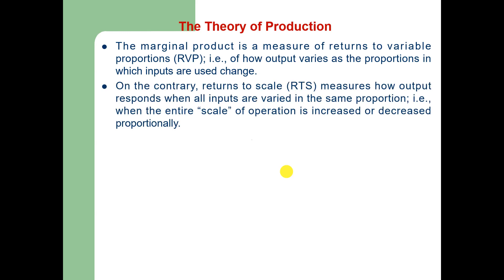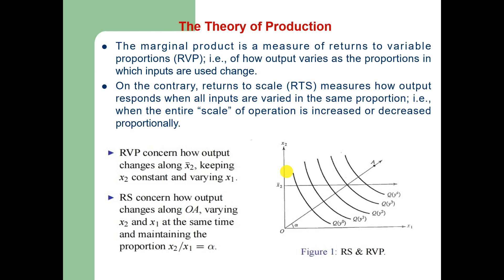On the other hand, return to scale measures how output responds when all inputs are changed in the same proportion — that is, when the entire scale of operation is increased or decreased proportionally. In this figure, we can see both returns to variable proportion as well as return to scale. As far as returns to variable proportion is concerned, it shows how output changes when we keep the amount of x2 input constant and we vary or change the amounts of x1, then output changes along this horizontal axis.